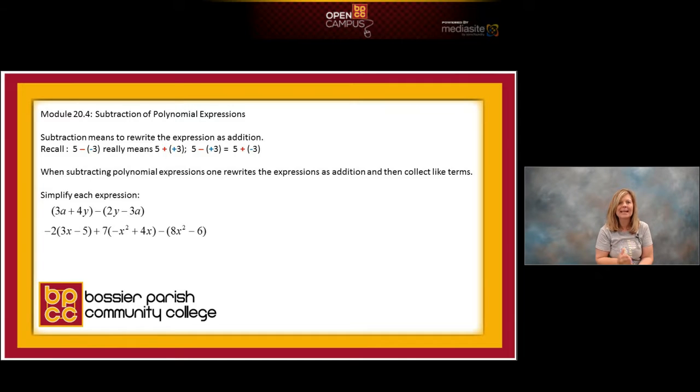So 5 minus negative 3. We're going to leave the first number 5. We're going to change the minus to addition. And then whatever is behind that subtraction symbol will become the opposite. And the opposite of negative 3 is positive 3. So the statement 5 minus negative 3 really means 5 plus a positive 3.